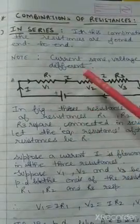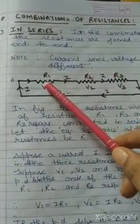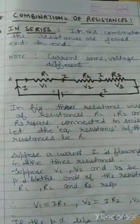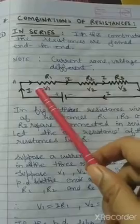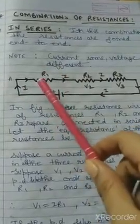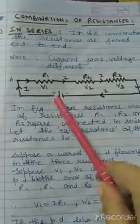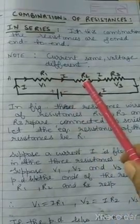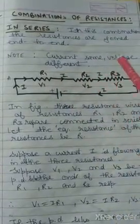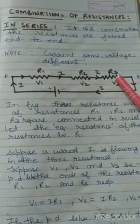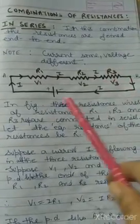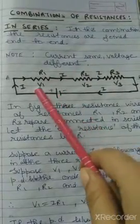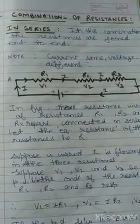As you can see here, three resistances R1, R2, and R3 are connected in series combination. The first end of R1 is connected with the positive terminal of the cell, and the second end is connected to the first end of R2. Similarly, the second end of R2 is connected to the first end of R3, and R3's second end is connected to the negative terminal of the cell. So you can see that there is an end-to-end combination.